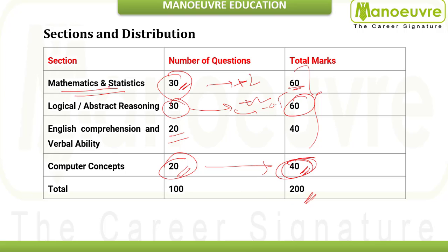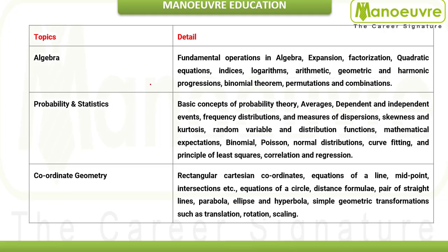Now let's dive deep into mathematics and statistics. First, the syllabus: Algebra covers AP, GP, harmonic progression, binomial theorem, permutation and combination, quadratic equations and their roots. Probability and statistics includes binomial theorem, binomial expansion, Poisson distribution, and probability theory. Coordinate geometry covers the Cartesian coordinate system and equations of figures like circles and ellipses.